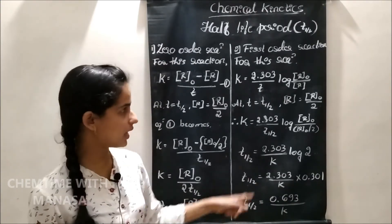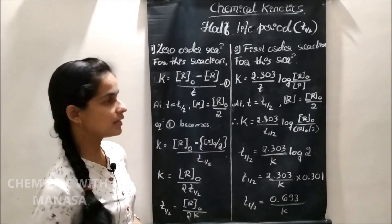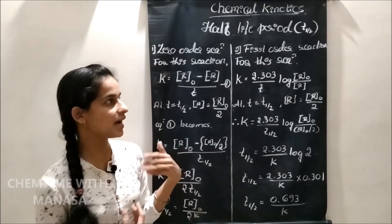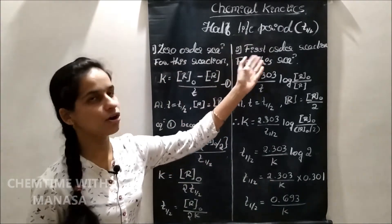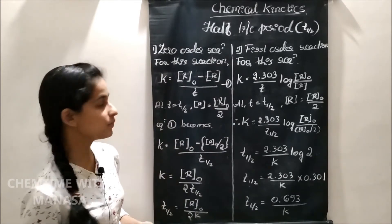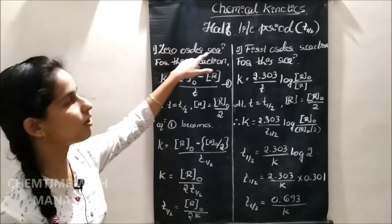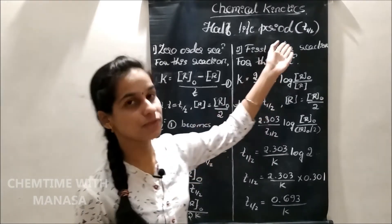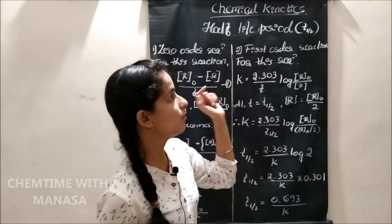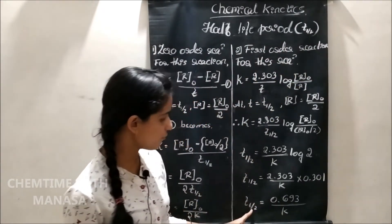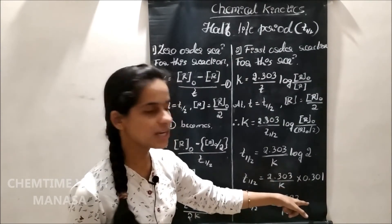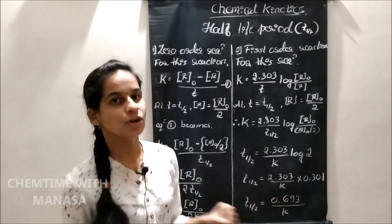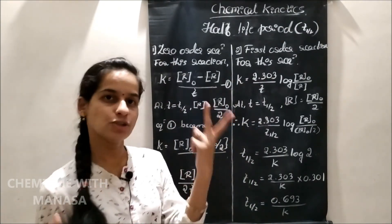Dear friends, these derivations are asked in two different ways. Either they ask directly for the derivation of the half-life period for zero or first order reactions, or for zero order they may ask: show that the half-life period is directly proportional to the initial concentration. For first order, the question may be: show that the half-life period is independent of the initial concentration, because in the T half equation there is no R naught term. So you must prepare these two equations, as the question may be framed in two different ways.